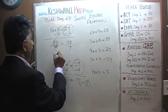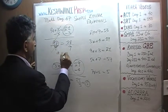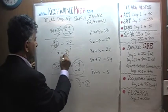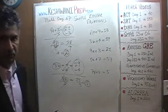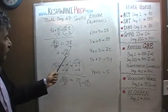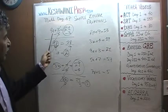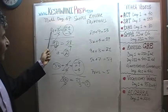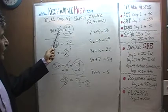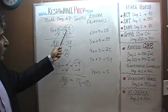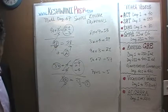We end up with a equals 2. Let's make sure it makes sense — put it back in here. 9 times 2 is 18. 18 plus 3 is 21, and that's exactly what we have there.